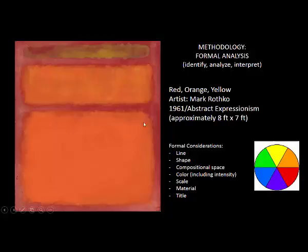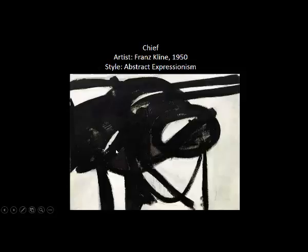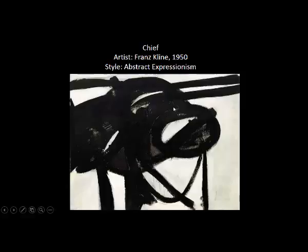Moving to shape: because Rothko uses analytical lines, they come together to create squares or rectangles — called geometric shapes. These have the same psychological effects as analytical lines: they tend to be more controlled and more austere. So even though Rothko is an abstract expressionist, his work is a bit more controlled than the craziness we see in other examples. In contrast, biomorphic or organic shapes are irregularly shaped. With compositional space, you determine how much of the composition the subject occupies — here the squares occupy almost the entirety of the compositional space, so they are authoritative, with a strong visual presence.